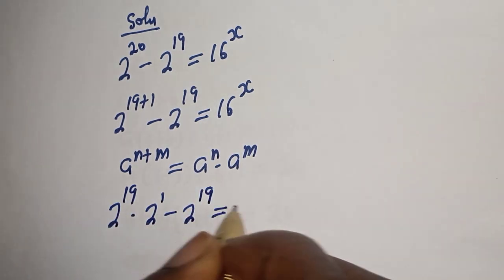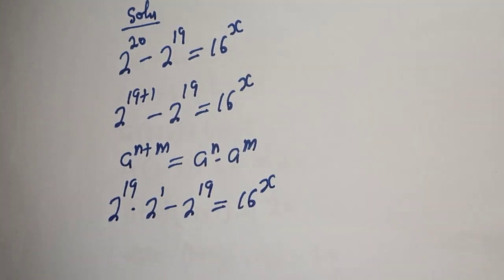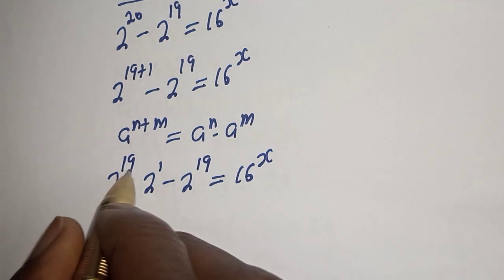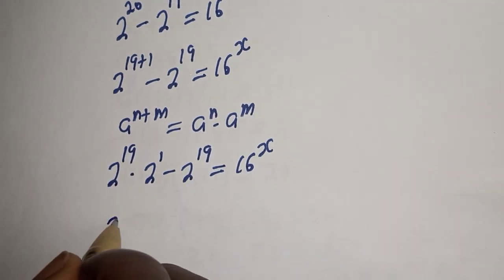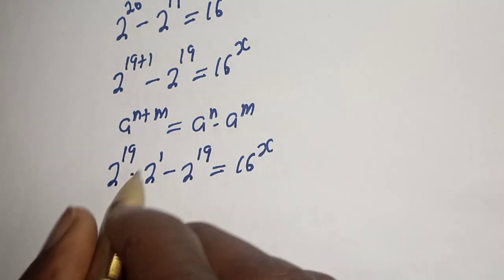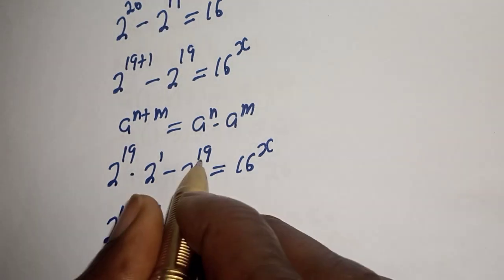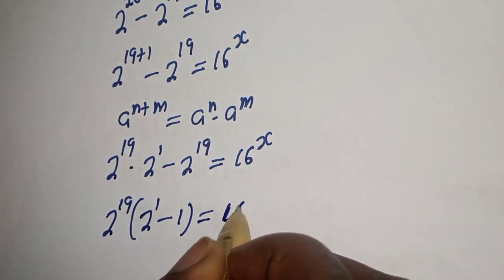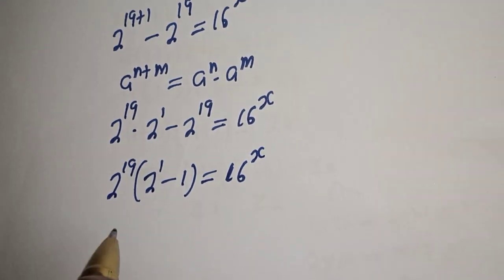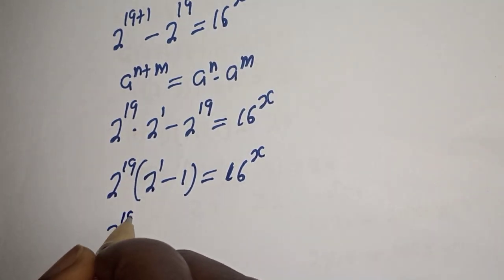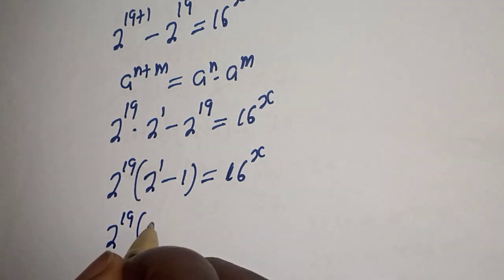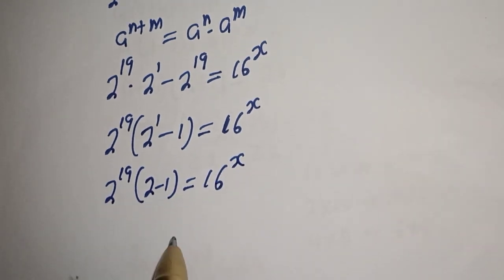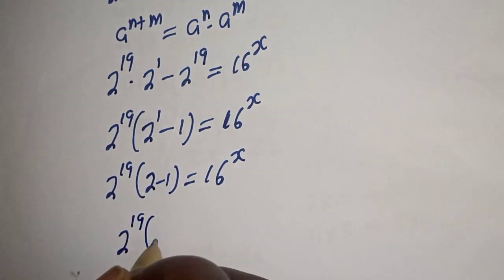Now 2 raised to power 19 is common — let's bring it out: 2 raised to power 19, bracket 2 raised to power 1 minus 1, is equal to 16 raised to power x. Then 2 raised to power 1 is 2, minus 1, inside the bracket equals 1.